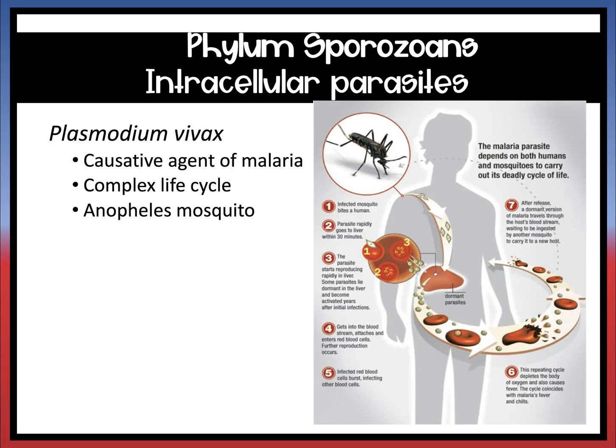The next phylum is phylum Sporozoans. These are your intracellular parasites, and they are the ones that lead to malaria. Malaria is carried by a mosquito.